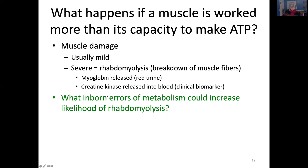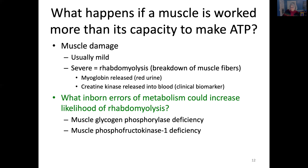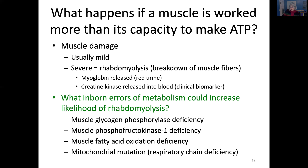Practice question: What inborn errors of metabolism could increase the likelihood of rhabdomyolysis? Muscle glycogen phosphorylase deficiency could do this. Muscle phosphofructokinase 1 deficiency — which affects glycolysis — can also cause rhabdomyolysis. Muscle fatty acid oxidation deficiencies can cause rhabdomyolysis as well, affecting the slower oxidative metabolism. Mitochondrial mutations and deficiencies in the respiratory chain are also implicated.